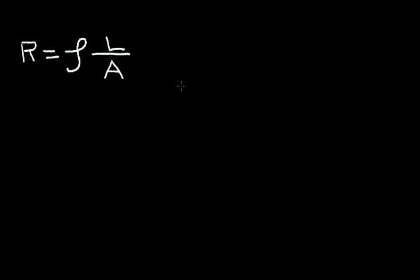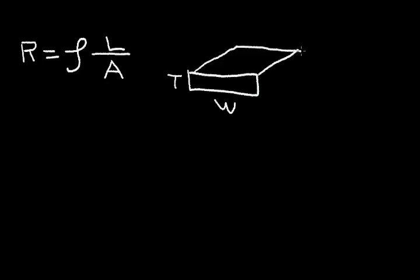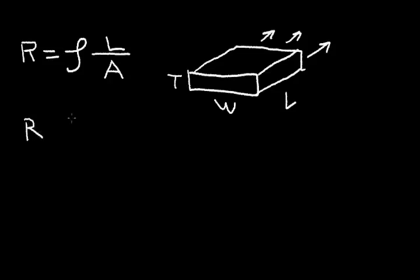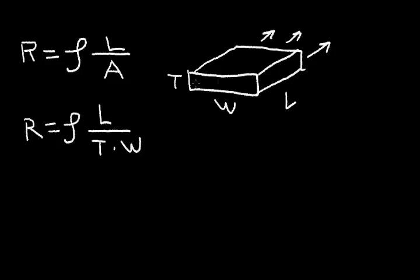If I have a thin sheet of material with a thickness that I'll call T, a width that I'll call W, and a length that I'll call L — the length is always in the direction of the current flow. So in this resistive material, the current is flowing in this direction. Let's rewrite this equation for this particular sheet of material.